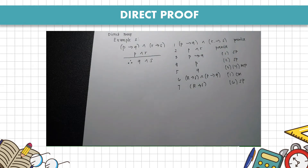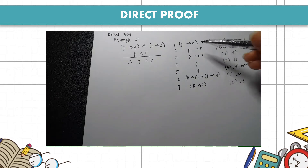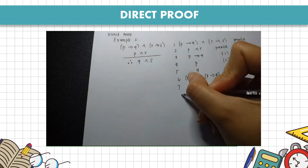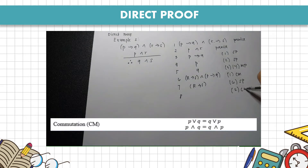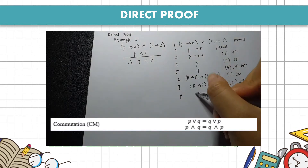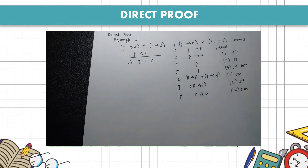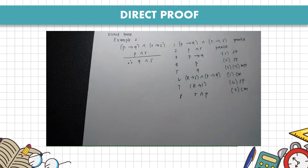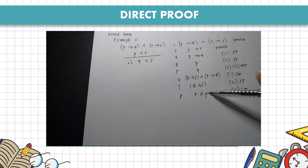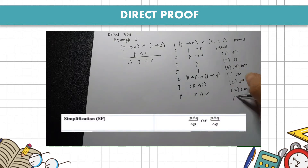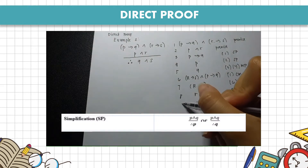We go back to premise 2 and apply commutation (CM), giving us R and P. Applying simplification to that result gives us R.